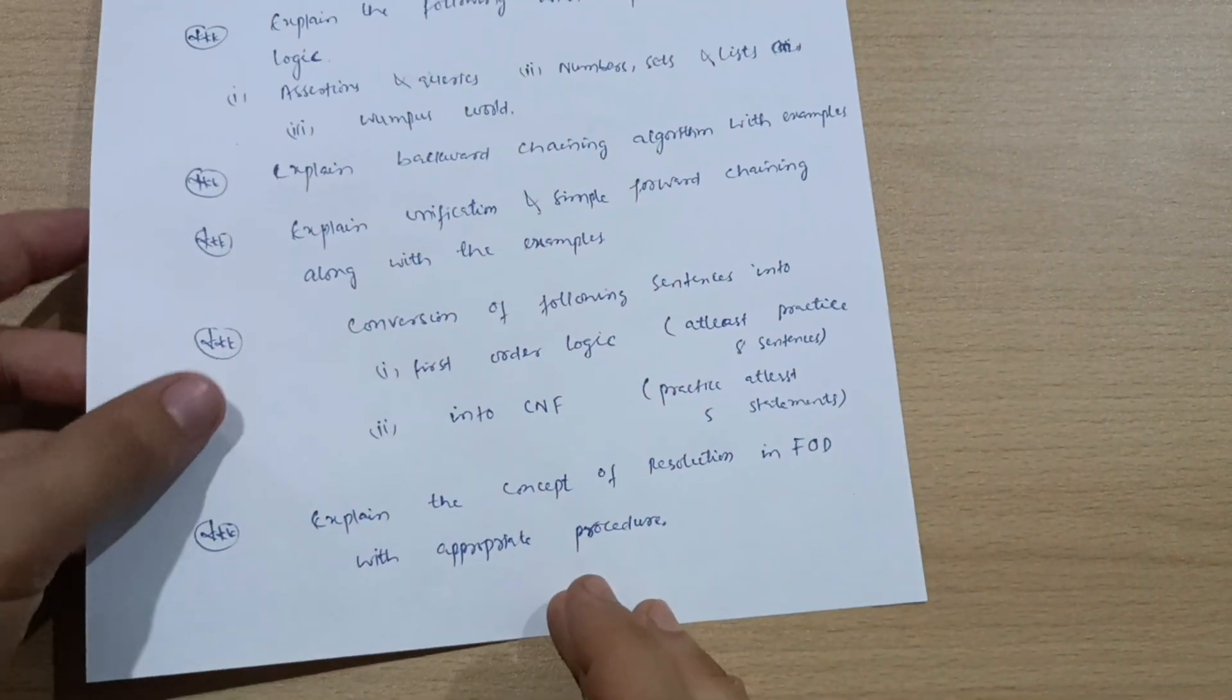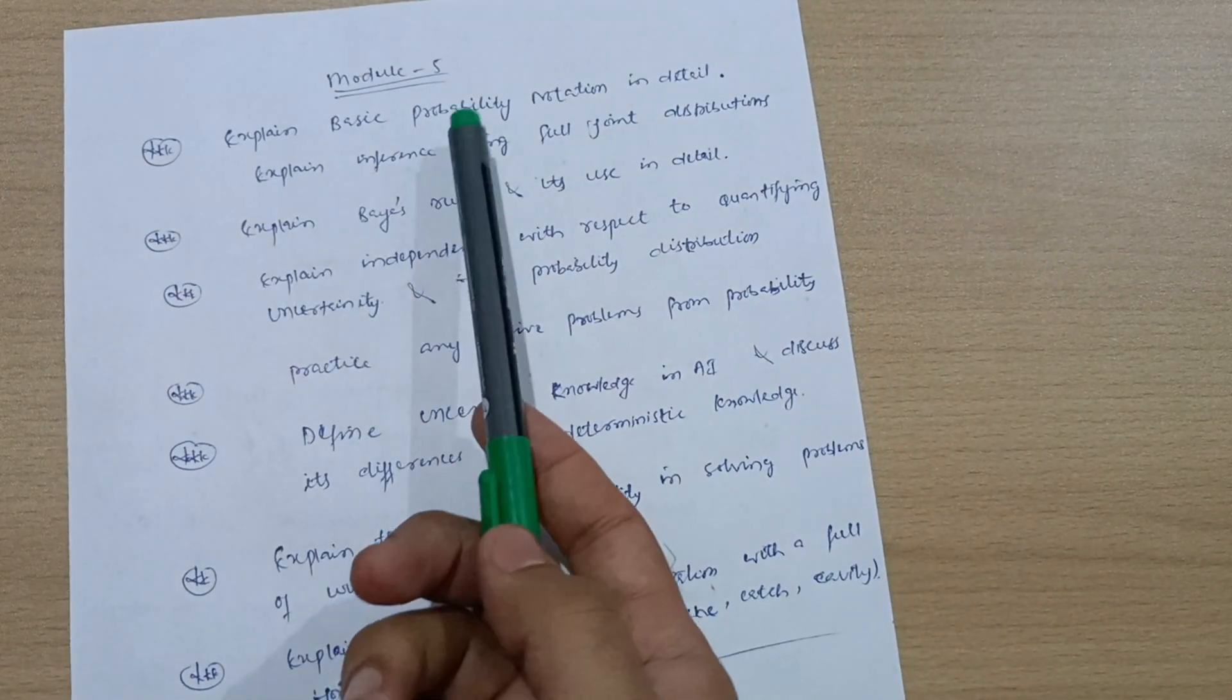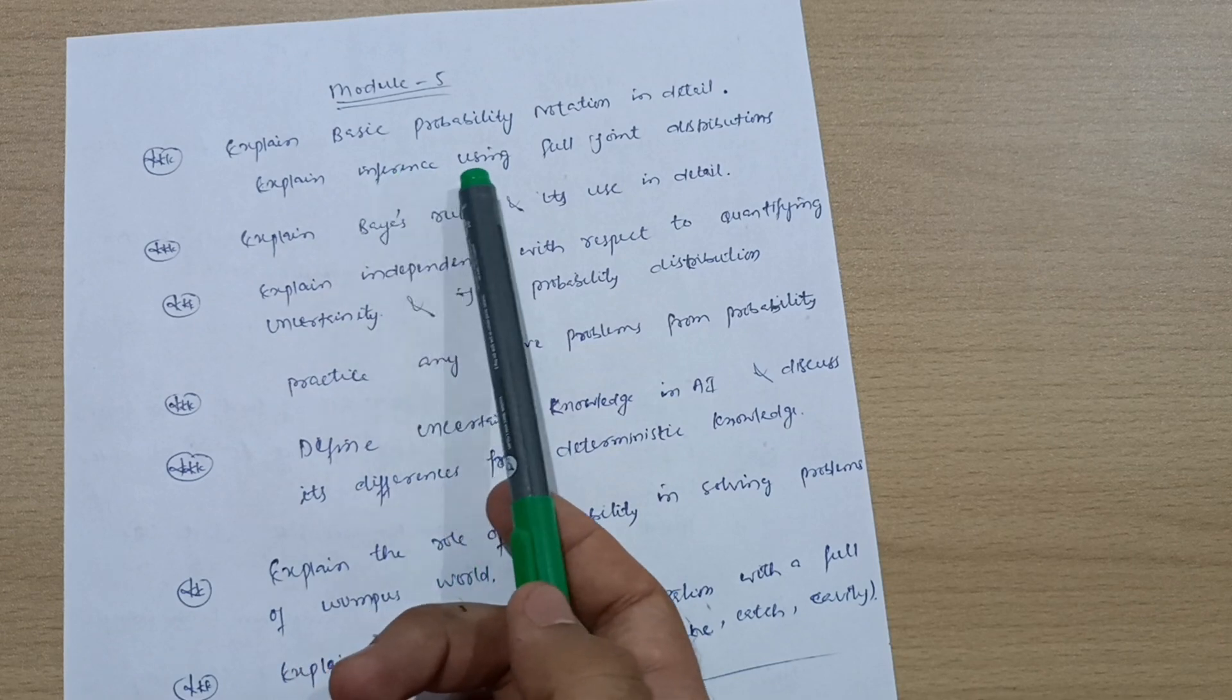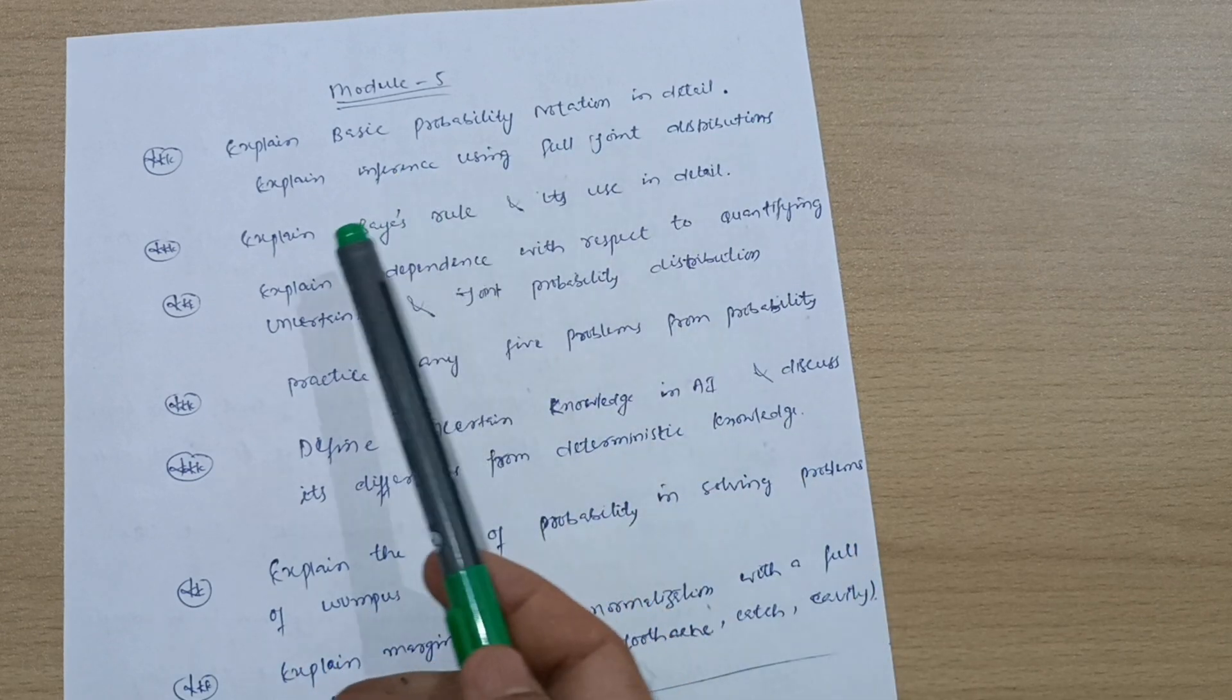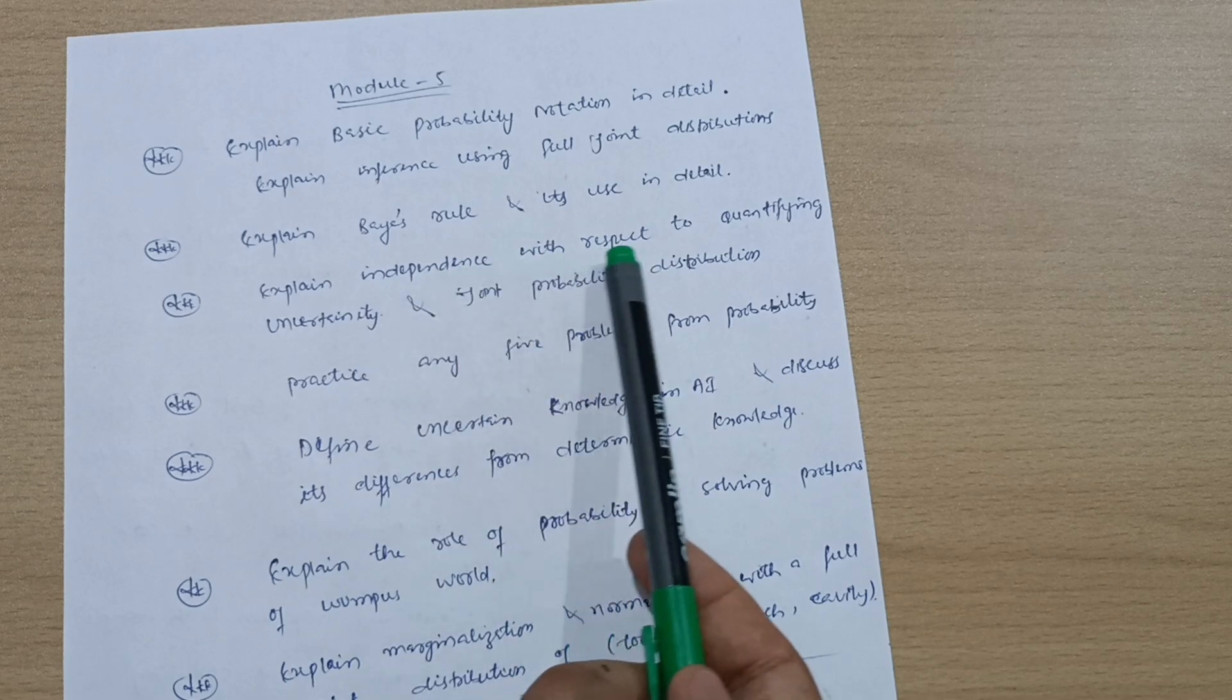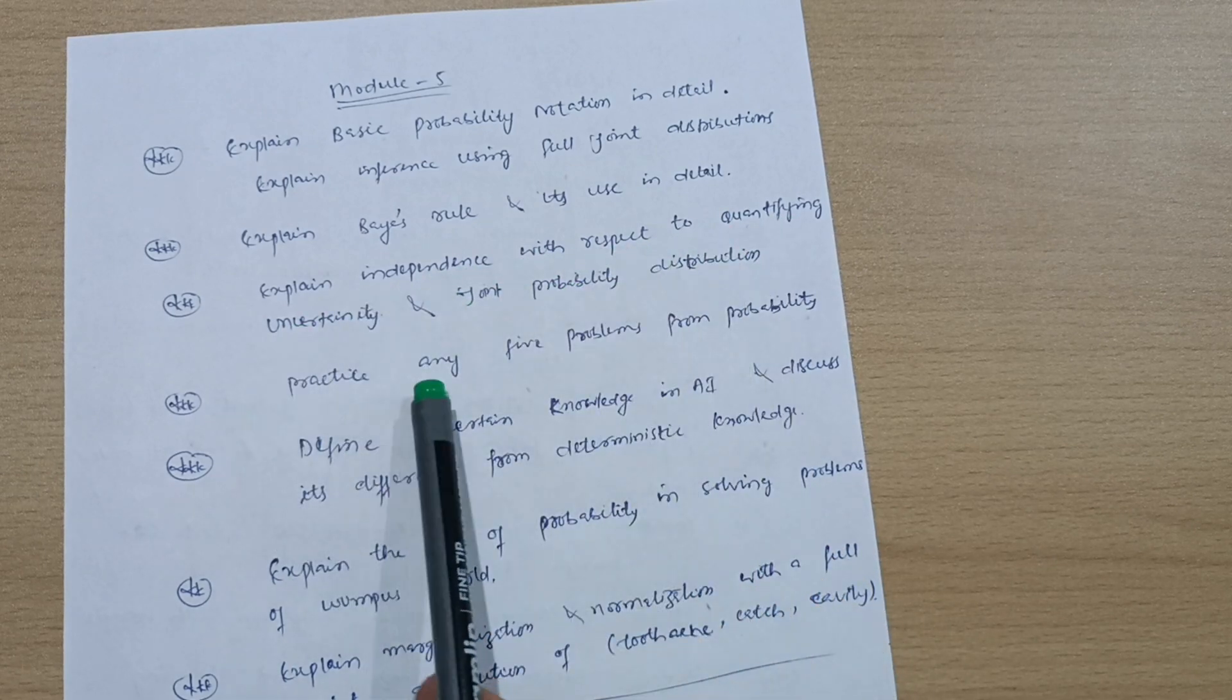This is all about Module 4. Next is Module 5: Expand basic probability notation in detail and expand inference using full joint distribution. Explain Bayes rule and its use in detail. Explain independence with respect to quantifying uncertainty and joint probability distribution. Practice any five problems from probability.